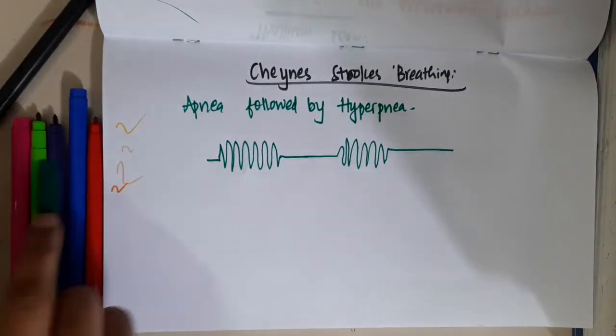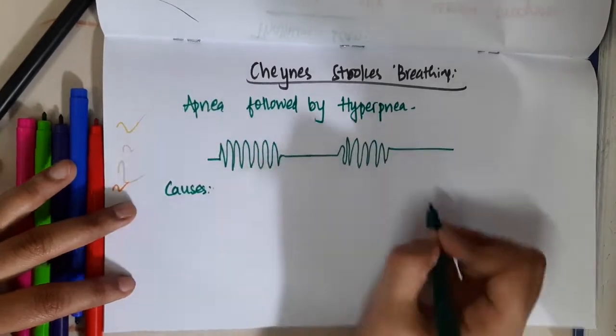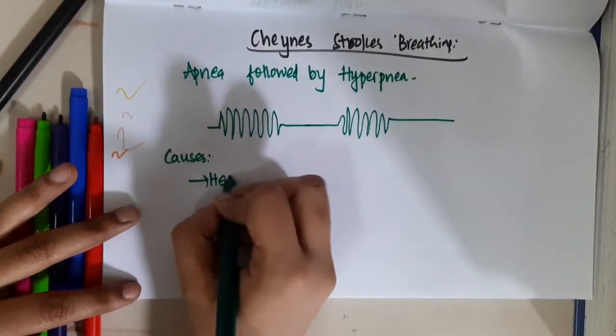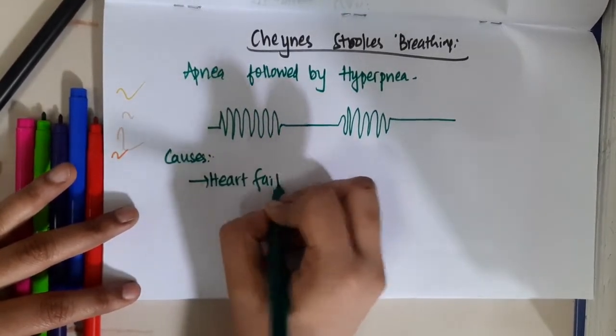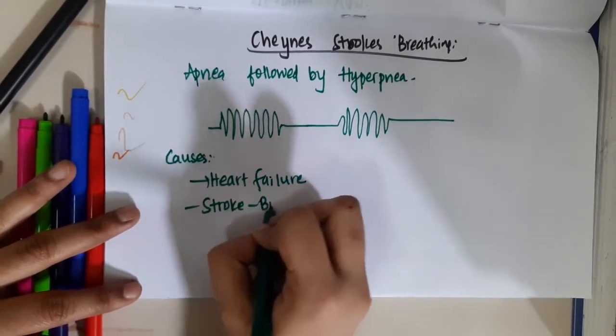This is Cheyne-Stokes breathing. So what are the causes of this Cheyne-Stokes breathing? It can occur in heart failure. It can occur in stroke, that is bi-hemispherical damage.